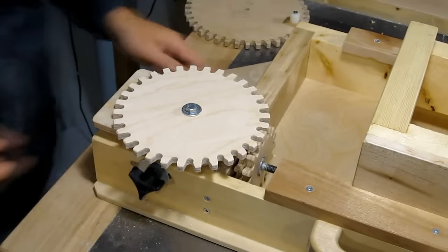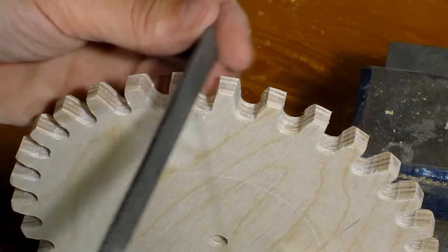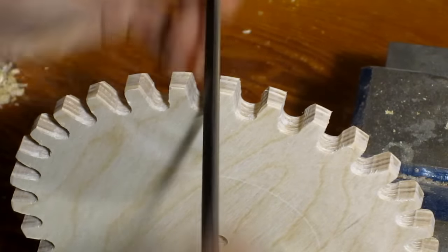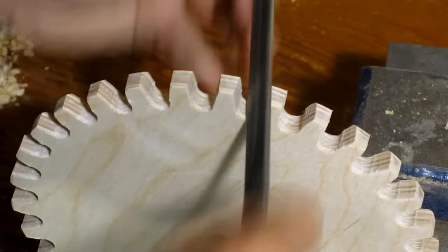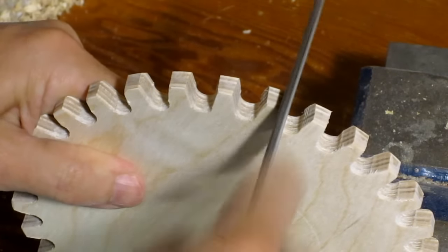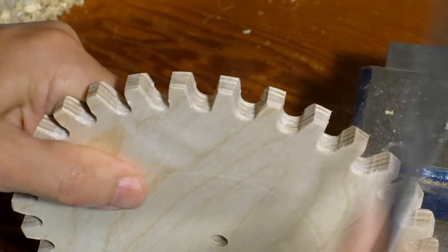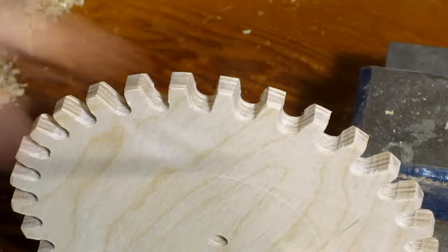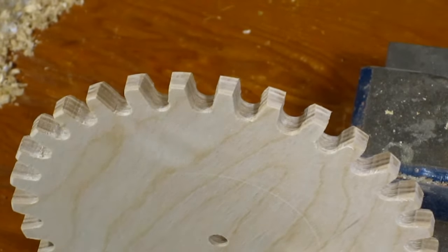If the gears end up binding a little bit then you can tweak them by just filing down the shape of the teeth a little bit. This gear really didn't need any of that but I'm just showing to demonstrate. You can also see how the teeth are actually a little bit narrow towards the camera. This is from when I tilted the table on the bandsaw.